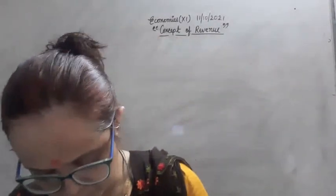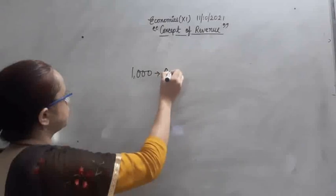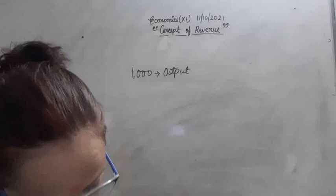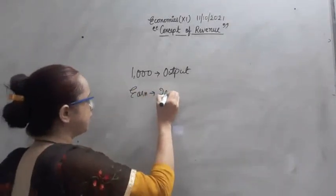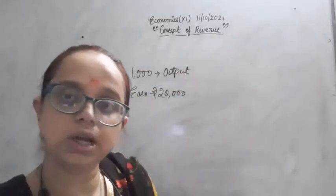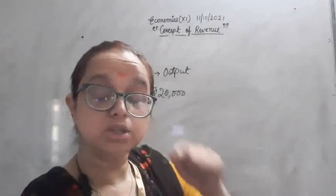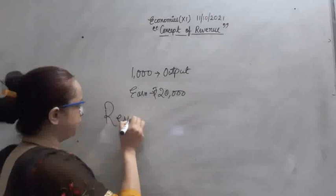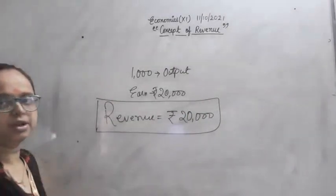For example, suppose a producer has produced one thousand tables. By selling these tables, he gets twenty thousand rupees. So this sale proceeds — the money the firm receives — that is called revenue. In economics, this twenty thousand rupees is known as revenue.